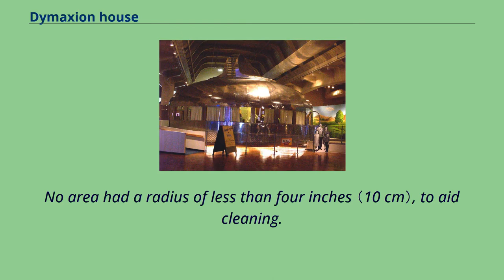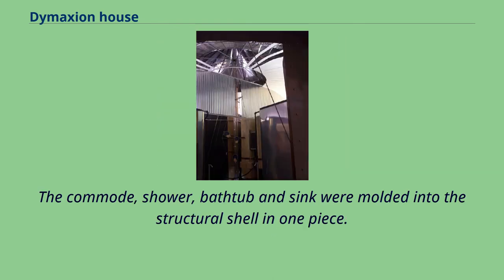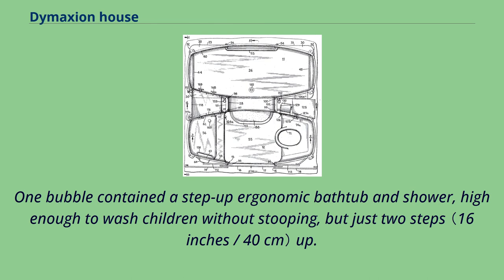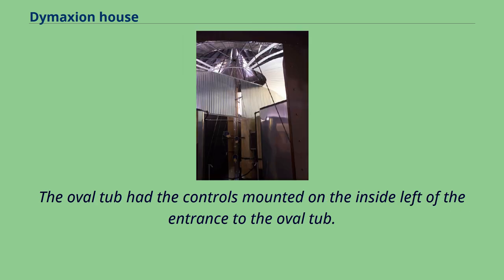The bottom piece is fully plated in tin/antimony alloy and the top half is painted. Each bubble had a drain, and no area had a radius of less than four inches to aid cleaning. The commode, shower, bathtub, and sink were molded into the structural shell in one piece. One bubble contained a step-up ergonomic bathtub and shower, high enough to wash children without stooping, but just two steps up. The oval tub had the controls mounted on the inside left of the entrance.